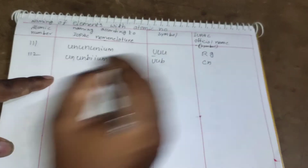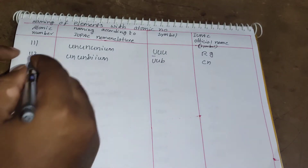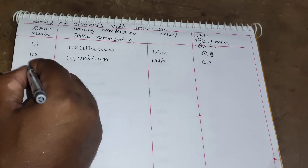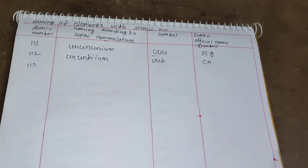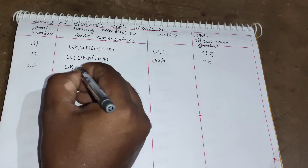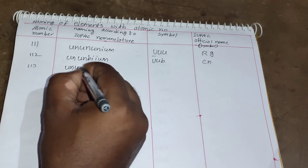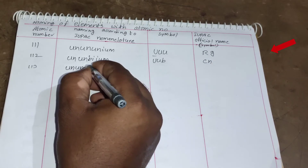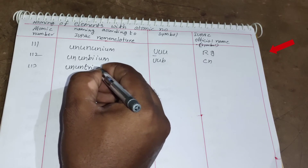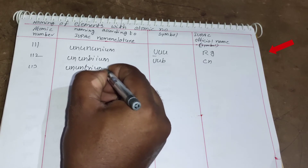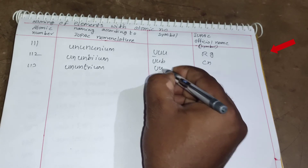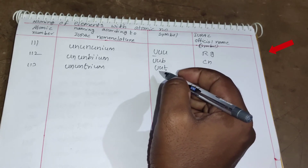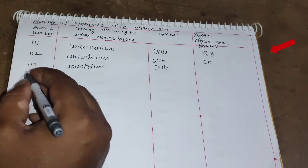For element 113: 1 = un, 1 = un, 3 = tri, plus '-ium' gives Ununtrium. The symbol is Uut.